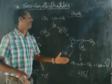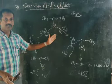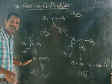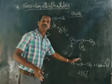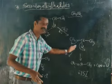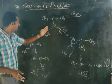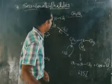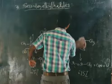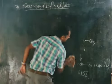So for primary alkyl halides, SN2 is faster than E2. But for secondary alkyl halides, E2 is faster than SN2 because the increasing steric factor slows down the SN2 reaction rate.